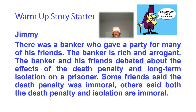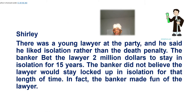Let's look at Jimmy. Jimmy said there was a banker who gave a party for many of his friends. The banker is rich and arrogant. The banker and his friends debated about the effects of the death penalty and long-term isolation on a prisoner. Some friends said the death penalty was immoral. Others said both the death penalty and isolation are immoral. That's real good, Jimmy. You gave some specifics, it was detailed, it was logical. And I like the part where you talked about the banker being rich and arrogant. Very good.